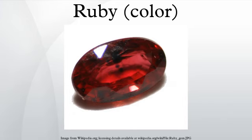Ruby is a color that is a representation of the color of the cut and polished ruby gemstone, and is a shade of red or pink. The somewhat deeper color of the uncut, unpolished ruby crystal is called rubelite.